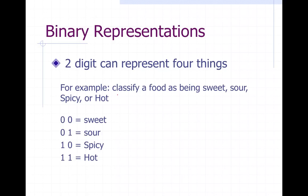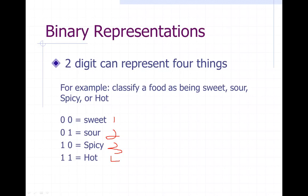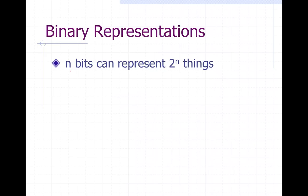For example, we're going to classify food as being sweet, sour, spicy, or hot. So sweet can be zero-zero, sour can be zero-one, spicy can be one-zero, and hot can be one-one. So we've got one, two, three, four things that can be represented with two digits of binary information.